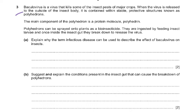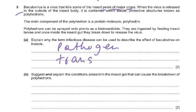Question 3: Baculovirus kills insect pests of major crops. When released outside the insect body, it is contained in stable protective structures called polyhedrons, whose main component is a protein molecule called polyhedrin. Polyhedrons can be sprayed as a bioinsecticide, are ingested by insect larvae, and break down inside the insect gut to release the virus. The term 'infectious disease' applies because a pathogen is involved and it is transmissible — it can be transferred from one insect host to another.